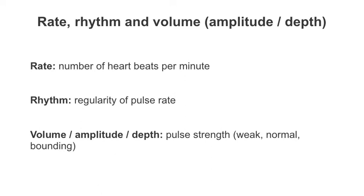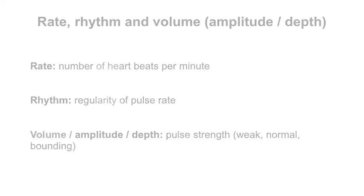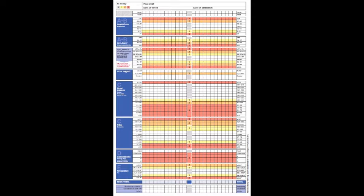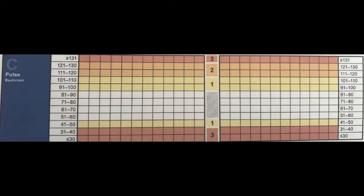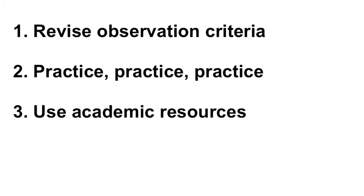When undertaking the pulse, you must assess the rate, rhythm, and volume. The rate is equal to how many electrical impulses are generated from the heart itself, otherwise known as the heartbeat. The rhythm of the pulse should be regular, but some patients may have irregularities noted — these should be reported to your mentor and medical team immediately. The volume is indicative of the patient's circulatory volume and also looks at the strength of the pulse. Once you have completed the pulse rate assessment, you must accurately document the value recorded on an appropriate observation chart used in practice, such as the National Early Warning Score 2 or the Paediatric Early Warning Score charts. Remember to revise the observation criteria for each skill, practice as much as you can, and use appropriate academic resources to underpin your knowledge.